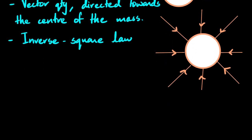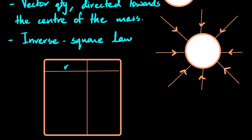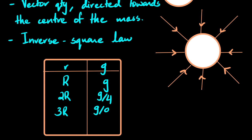Let me show this concept through a table of values. At distance R the gravitational field strength is g. If the distance doubles, by the inverse square law it becomes one-fourth. If it triples, it becomes one-ninth. If the distance increases by a factor of four, the field strength decreases by a factor of 16. We've also noted that gravitational field strength can be thought of as the acceleration due to gravity on the surface of a planet.